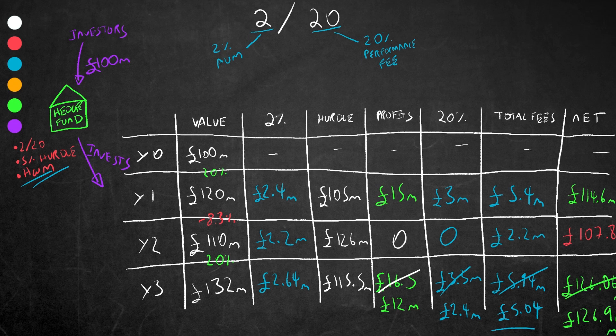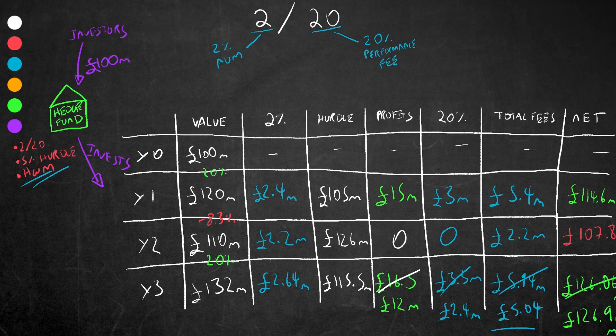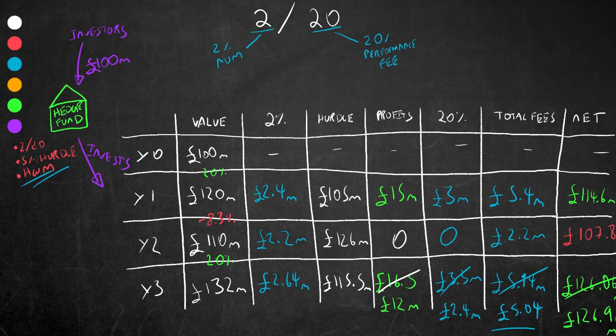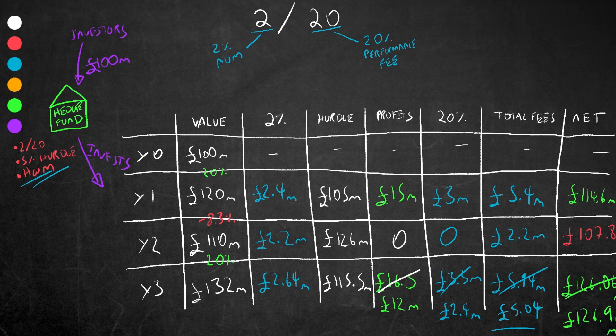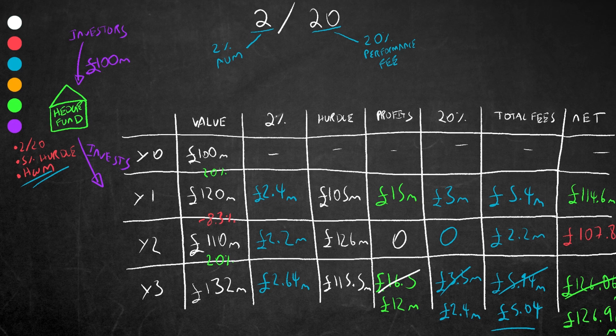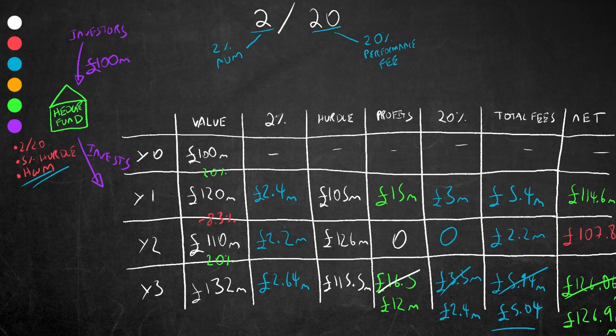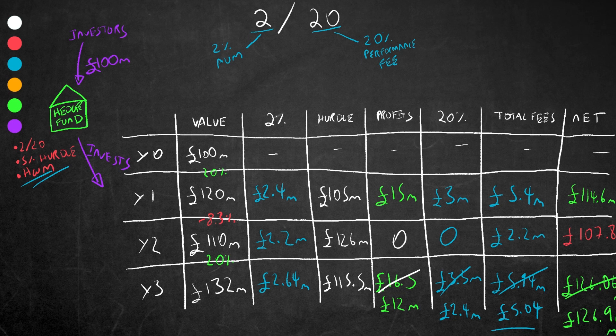Just note that this is more of an example rather than a rule, and hedge funds really do whatever they like with lots of variations. This is just a typical standard 2 and 20 structure. It is a classic charging structure that in the past has made hedge funds collect some very high fees for their work. However, in recent years it has faced backlash due to hedge funds not performing as well as expected, proving an unjustification for the high fees. Some critics say that the non-performance related 2 percent management fee incentivizes hedge funds to take on more risks than they should.